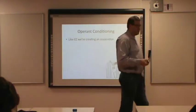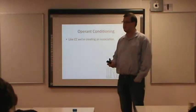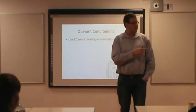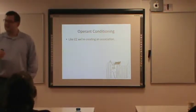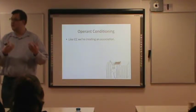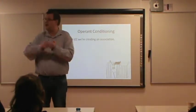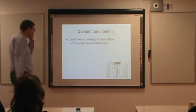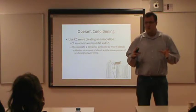Like classical conditioning, operant conditioning is creating an association between things. In classical conditioning, we were associating two stimuli together — a neutral stimulus with an unconditioned stimulus. Because there's already an association between the unconditioned stimulus and the unconditioned response, an association is created with those as well. In operant conditioning, though, we're not associating two stimuli — we're associating a behavior with a stimulus.